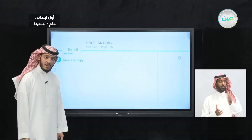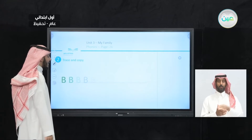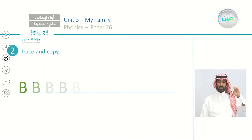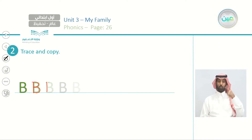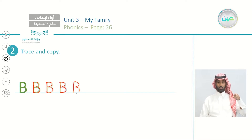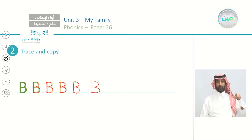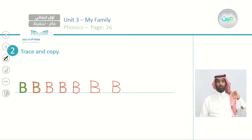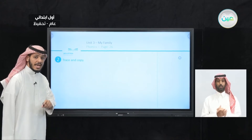What after A? We have B. So we have B in capital form. Let's trace: one line, two half circles on the right side. Again: one and two half circles. One more time: one line, two half circles on the right side. Let's write it two more times. This is B, and we pronounce it as B.